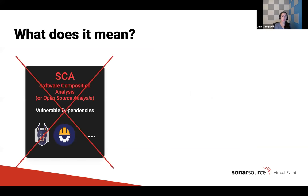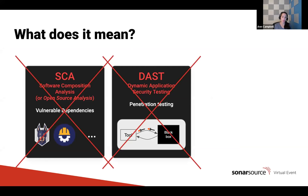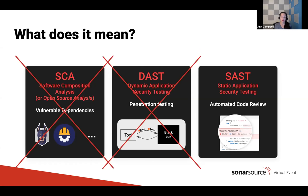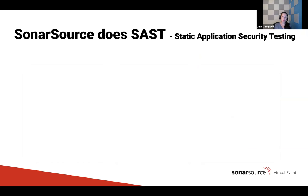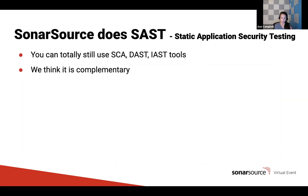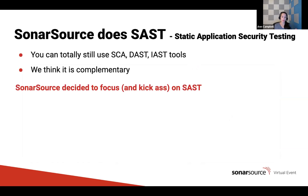Code security doesn't mean SCA or software composition analysis — checking libraries to see if you're using a version with a known problem. There are other companies that do that, such as Snyk and WhiteSource, and they do it well. It's also not DAST, dynamic application security testing, where you spin up an instance of your application and a tester probes it. What we do is static analysis, so it's natural we would do static application security testing, or SAST, and automated code review. You should totally use those other tools — they're completely complementary — but what we've decided to focus on and kick ass at is SAST, done in the code review process.